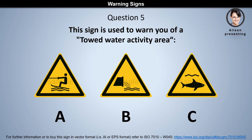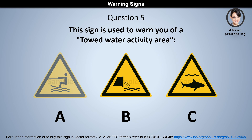Question 5. This sign is used to warn you of a toad water activity area. Is it A, B, or C? The answer is A.